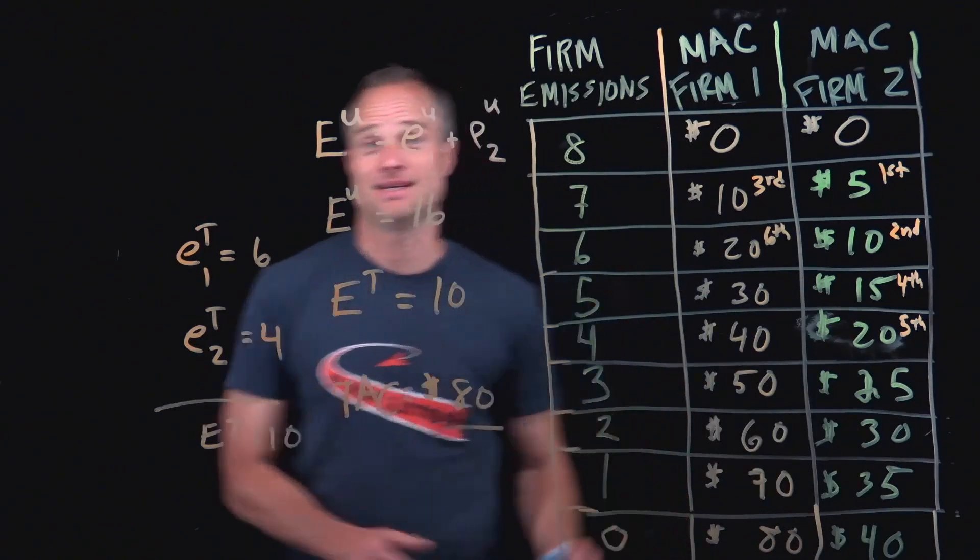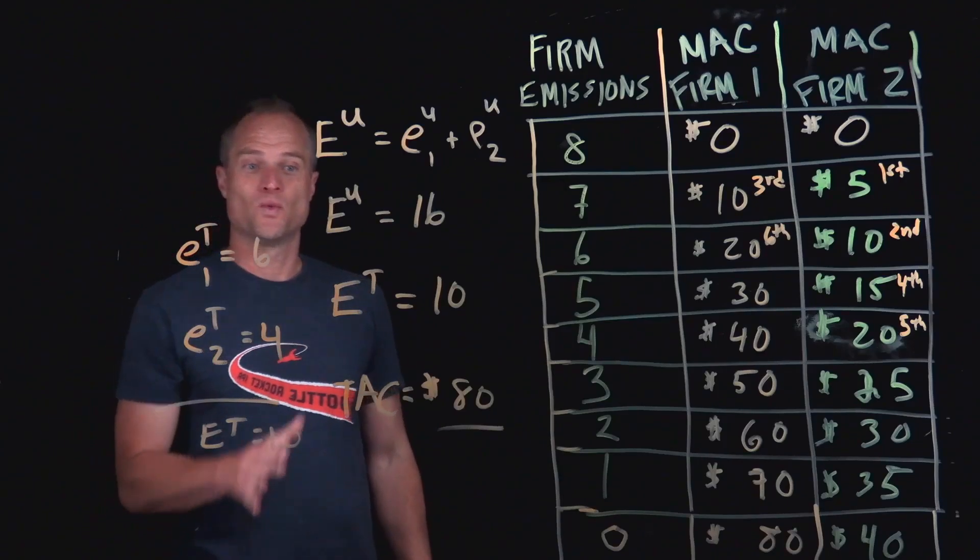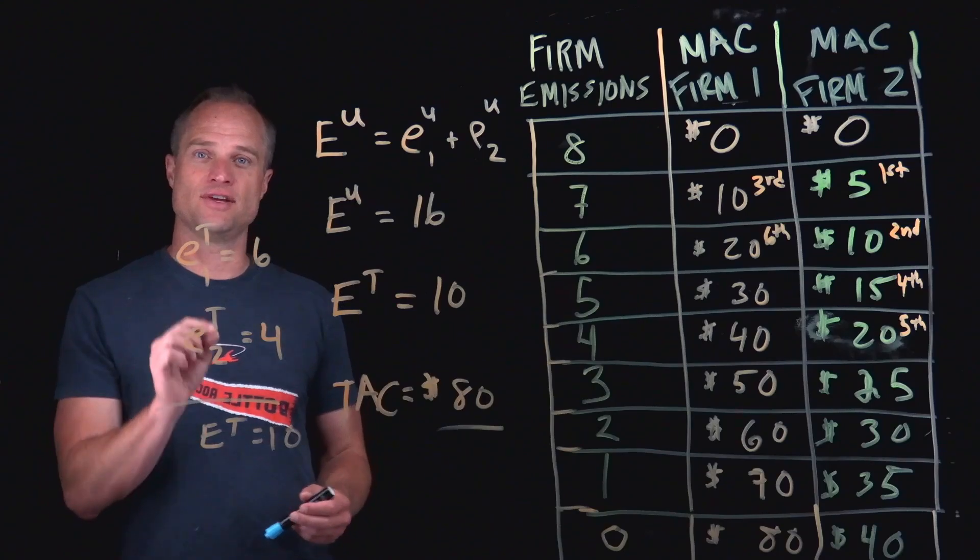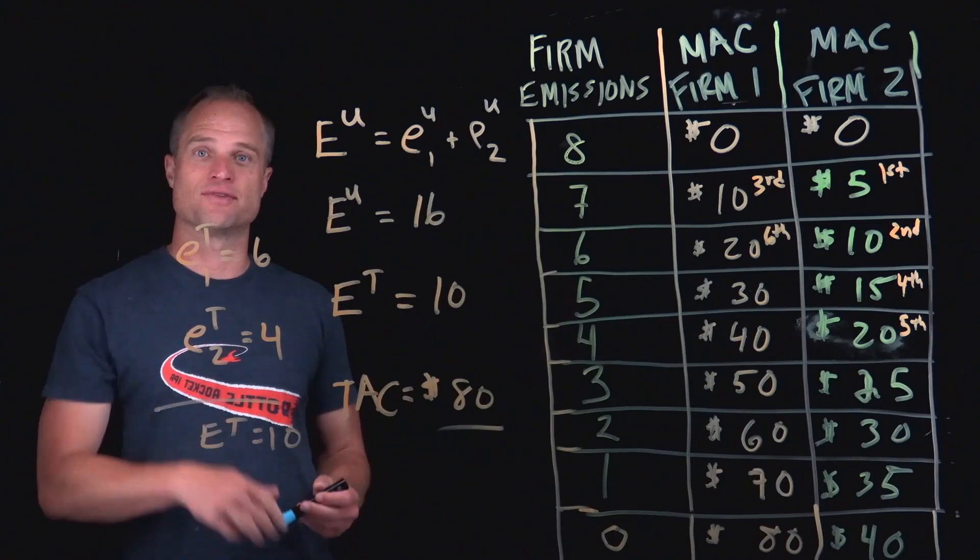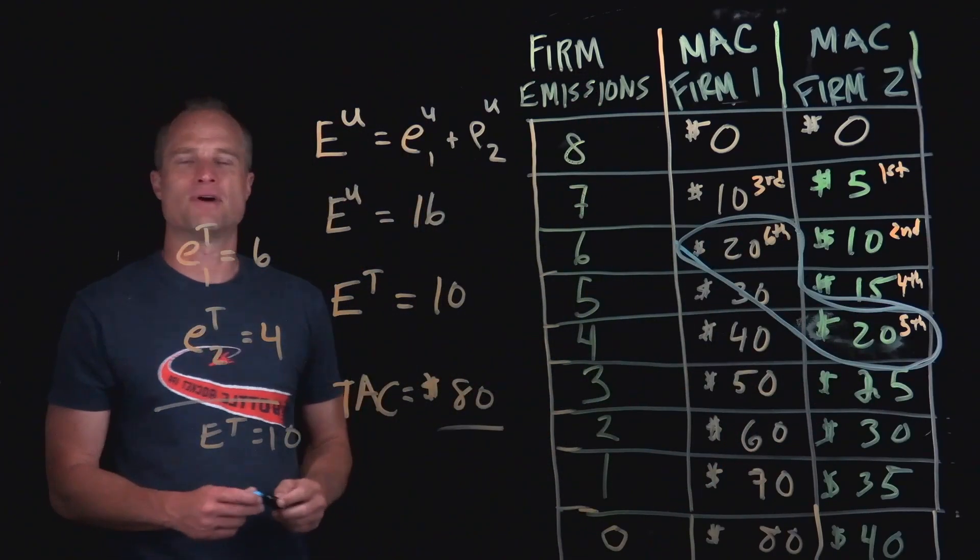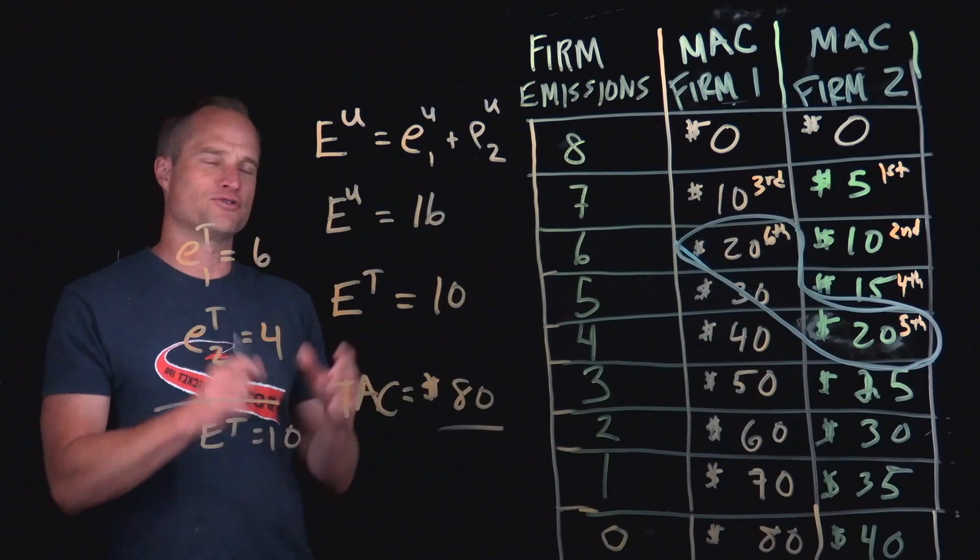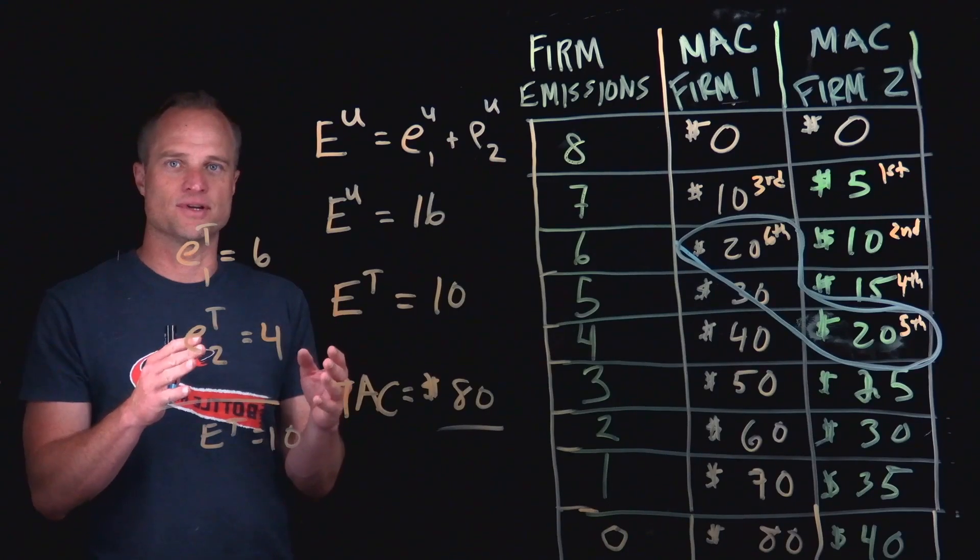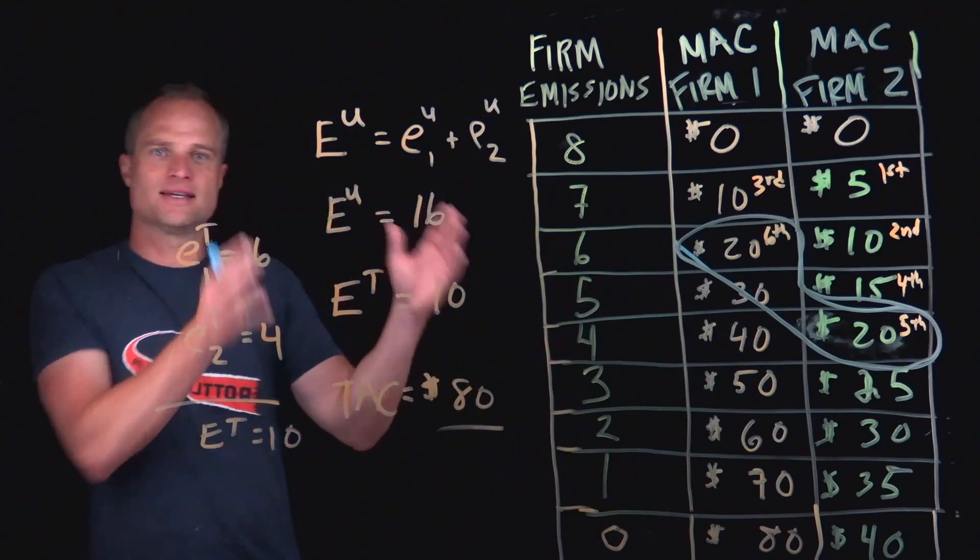But most importantly, last but not least, what does this mean in terms of the marginal abatement costs of each firm at their choice of emissions? And we see that the marginal abatement costs are both 20 for firm one and two at their choice of emissions. So through this example, we see how this plays out. But what's the intuition? I think the intuition is very simple.